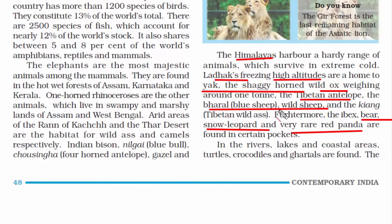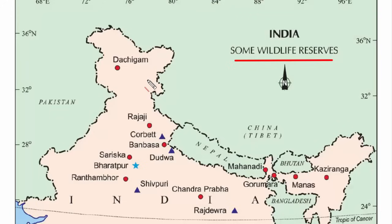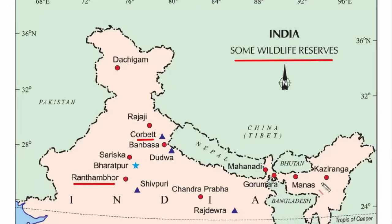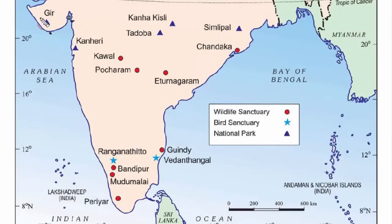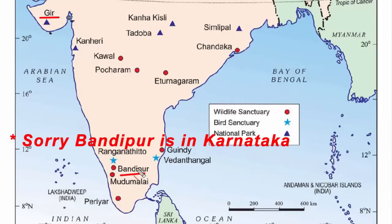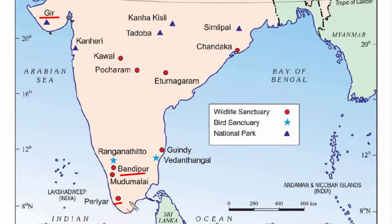This map shows all the wildlife reserves in India. Important ones to remember include Corbett Park in Uttarakhand, Ranthambore in Rajasthan, Kaziranga in Assam, Manas and Mahanadi reserves, Gir Forest in Gujarat, Bandipur in Karnataka, and Periyar in Kerala. These wildlife reserves are important from an exam and MCQ perspective, as questions on their locations are regularly asked.